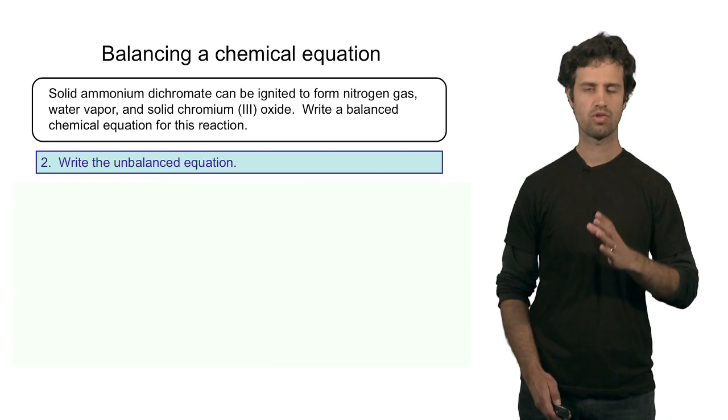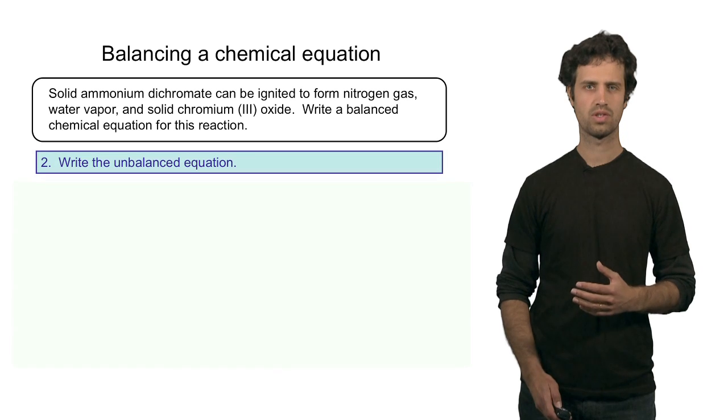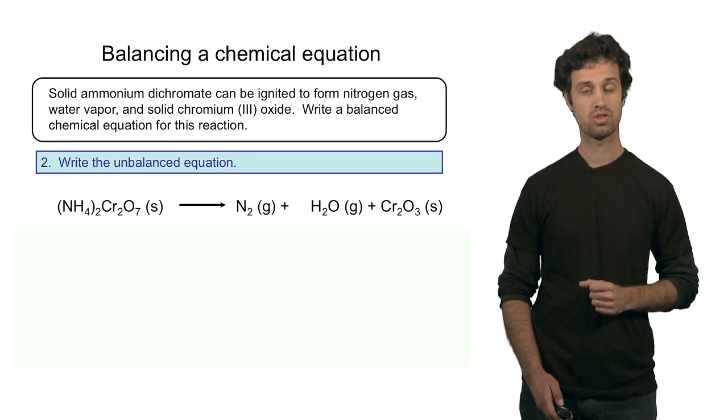The next step is to write the unbalanced equation. That's not difficult. We just put the reactants to the left and the products to the right.